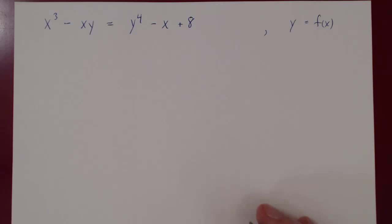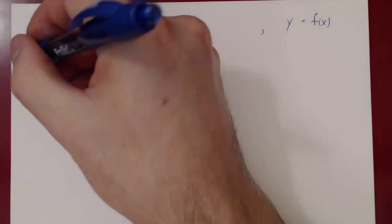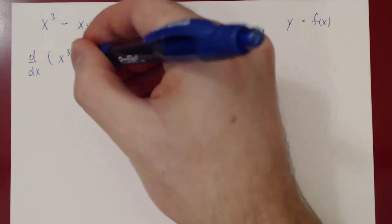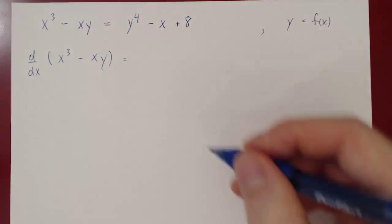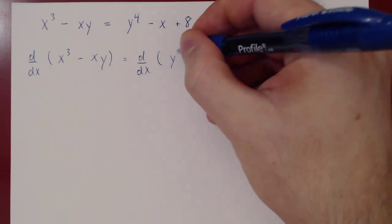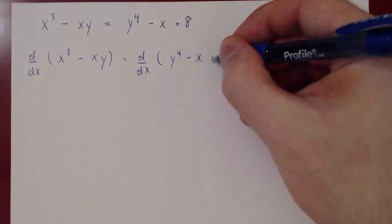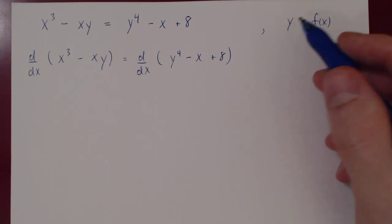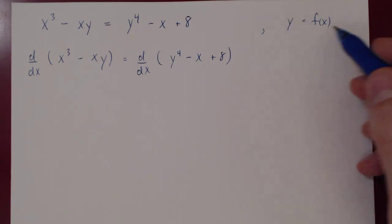Now let's find the derivative. Both sides are equal as functions of x, so we can differentiate both sides. The derivative with respect to x of the left-hand side, x cubed minus xy, will equal the derivative with respect to x of the right-hand side, y to the fourth minus x plus 8. Be very careful when a term contains y, because you have to apply the chain rule properly, since y is a function of x.